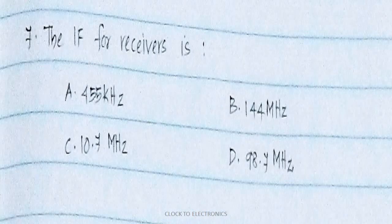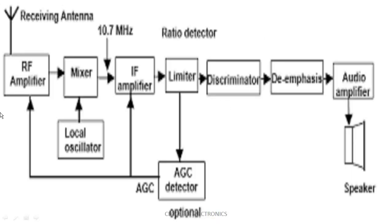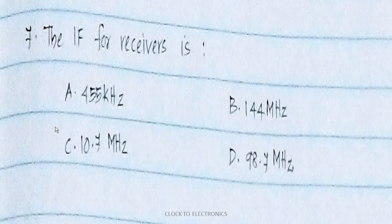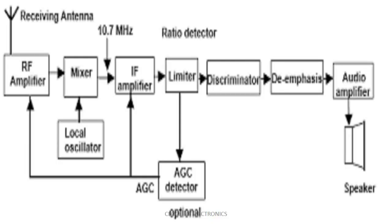The next question: IF for receivers — IF stands for intermediate frequency. In a receiver block diagram, there is an RF amplifier input, a local oscillator input, and a mixer. The mixer output gives the intermediate frequency. For FM receivers, the IF is 10.7 MHz. The answer is 10.7 MHz — option A.